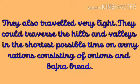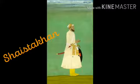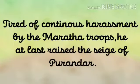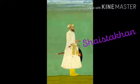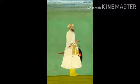The Maratha troops moved very fast on their swift Bhimthadi ponies. They also traveled very light and could traverse the hills and valleys in the shortest possible time on army rations consisting of onions and bajra bread. This type of warfare, perfected by the Marathas, was unknown to Shahist Khan. Tired of the continuous harassment by the Maratha troops, he at last raised the siege of Purandar.